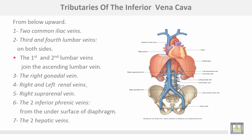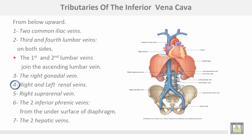The tributaries of the inferior vena cava from below upwards are: the two common iliac veins; the third and fourth lumbar veins (the first and second lumbars join the ascending lumbar vein); the right gonadal vein only, because the left gonadal drains into the left renal vein; the right and left renal veins; the right suprarenal vein; and the inferior phrenic veins from the inferior surface of the diaphragm, in addition to the two hepatic veins.